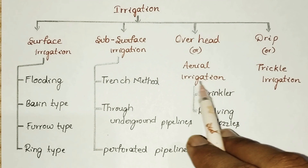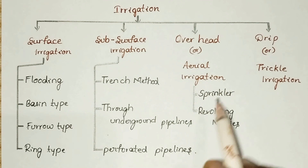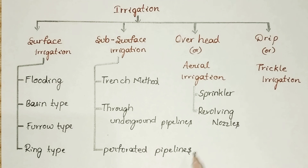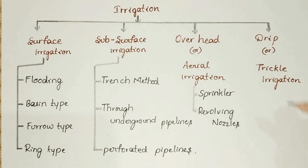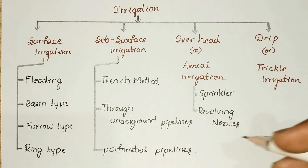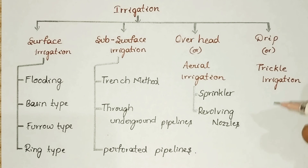Overhead or aerial irrigation has two subclasses: sprinkler or revolving nozzles. Drip or trickle irrigation is very simple and has no subclasses.